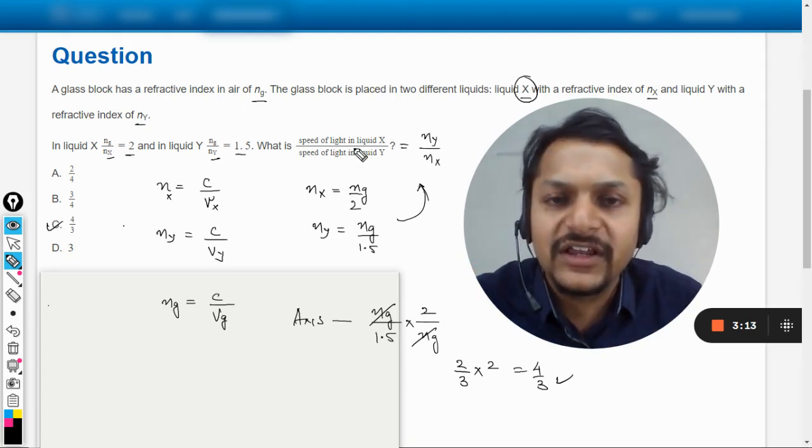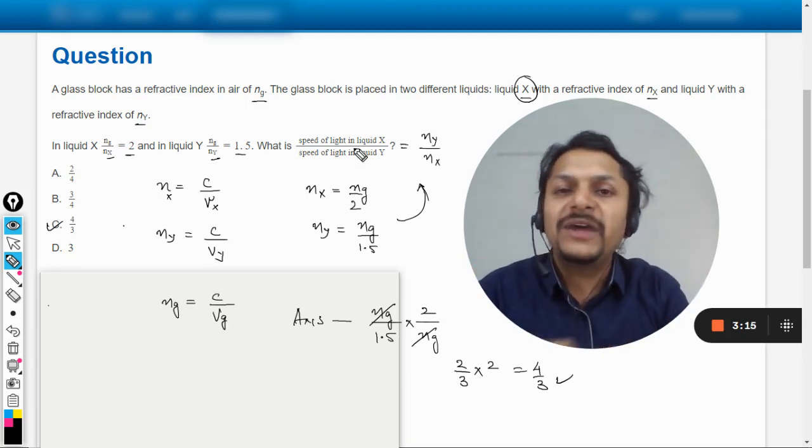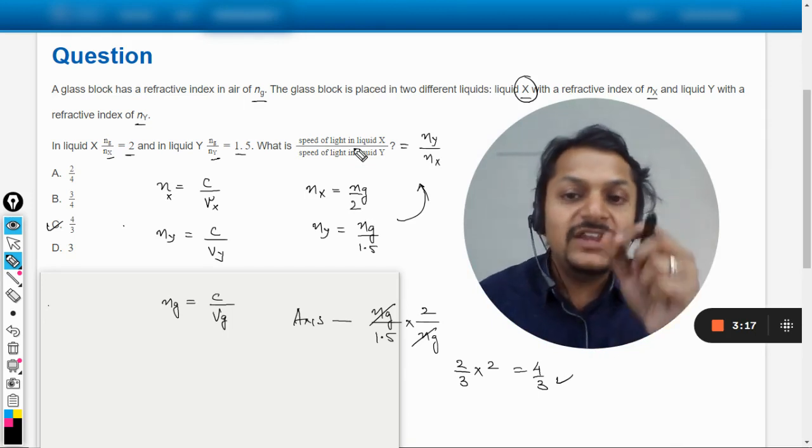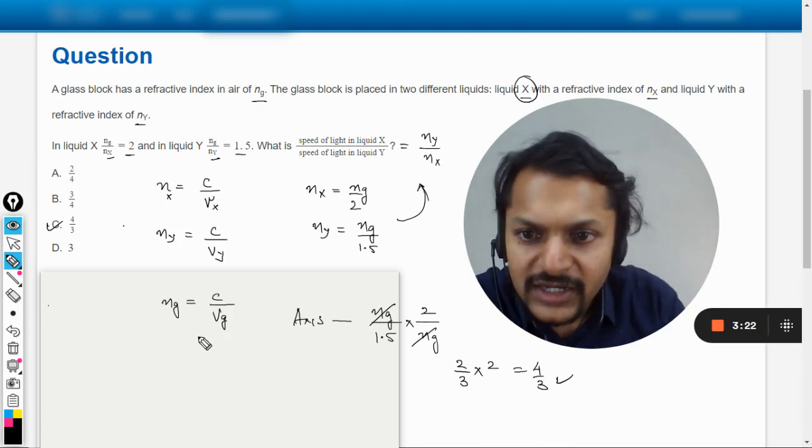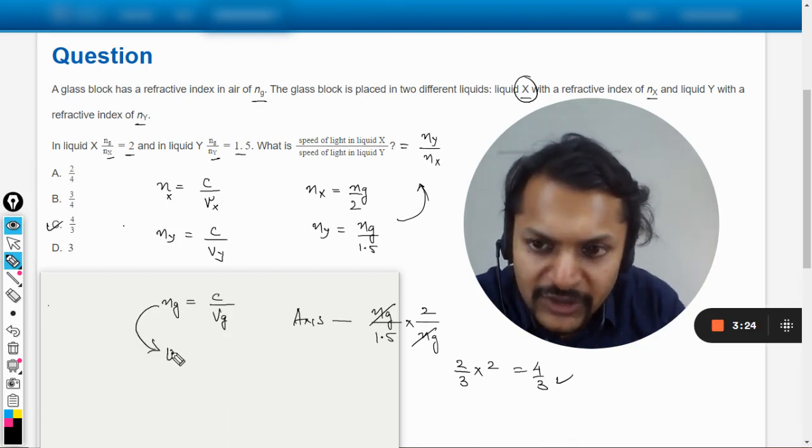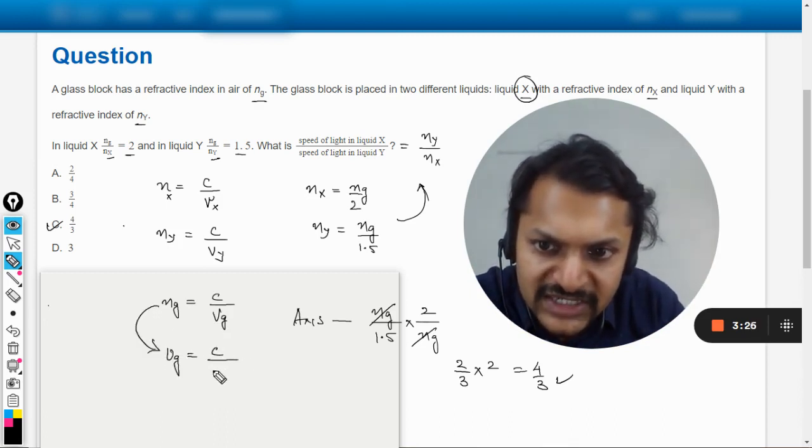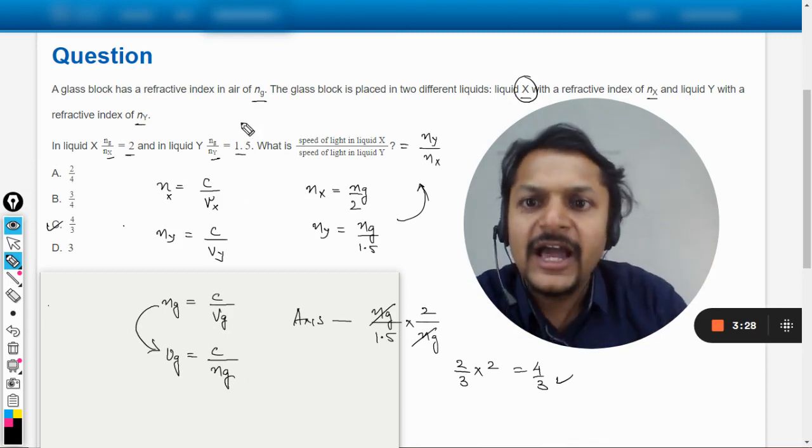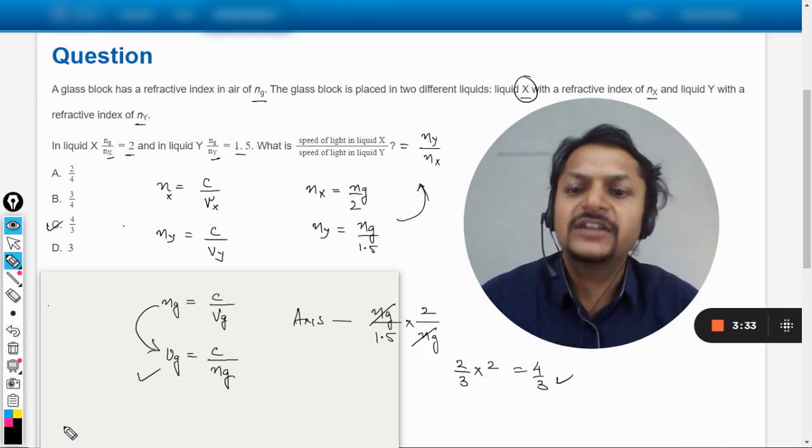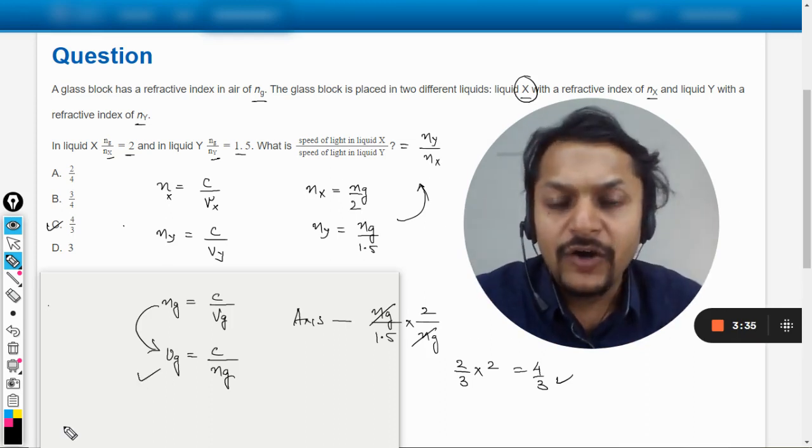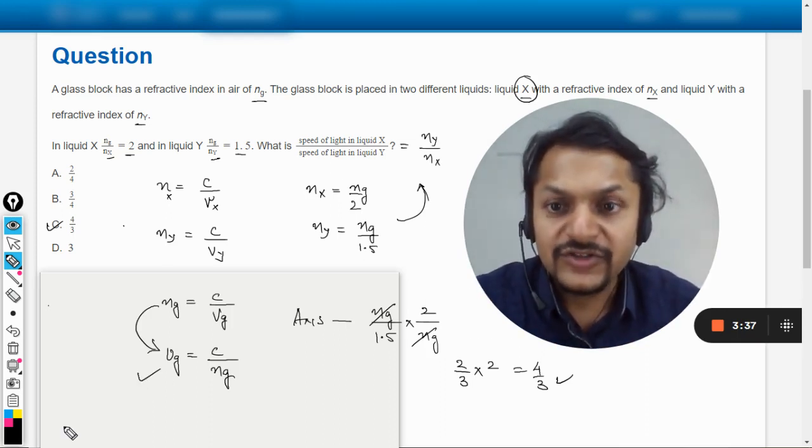It does not depend upon any other factor. Even if they ask you about what will be the speed of light in the glass, how would you be doing it? You would be taking this formula into account: VG = C divided by NG. And I know that refractive index for glass is 1.5, so we can just substitute the values and find the velocity of light inside the glass.